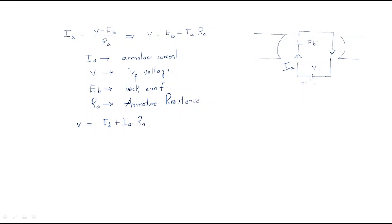If we multiply the entire equation by Ia on both sides, we get: V·Ia = Eb·Ia + Ia²·Ra.